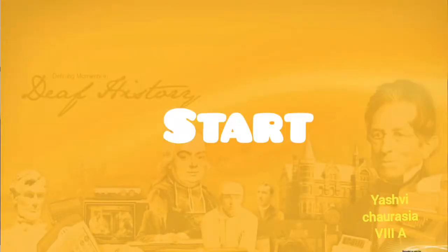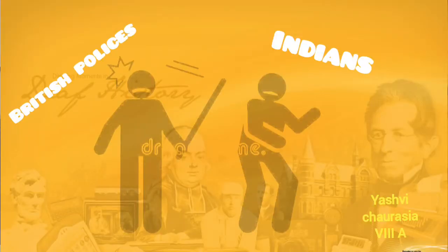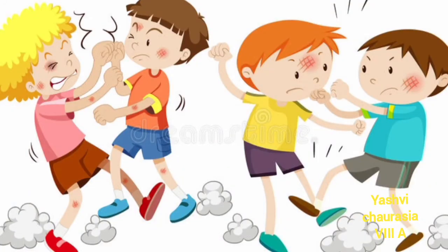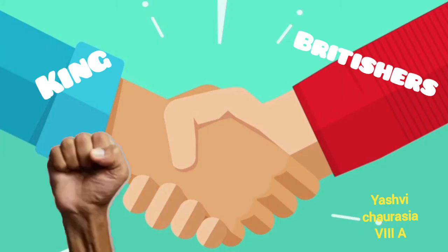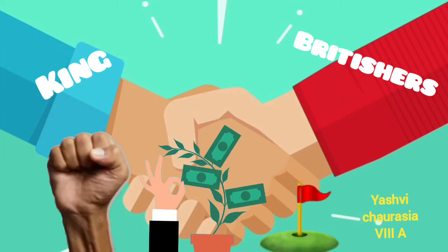First, the start. As we know, British policies were cruelly against the Indians. They exploited many kings, queens, peasants, and rulers, etc., by EIC or East India Company policies and persuaded them into conflicts, like the policy of subsidiary alliance for seizing power, wealth, and territory.